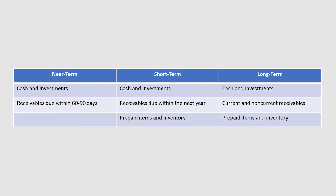Although all three approaches would report financial resources, their different timeframes would result in the reporting of a progressively broader set of assets and liabilities as you move from the near-term to short-term and to long-term. All three approaches would report cash and investments. They also would report receivables, but the near-term approach would be limited to receivables normally expected to be due within 60 to 90 days after fiscal year end, and the short-term approach to those normally expected to be due within the next year.